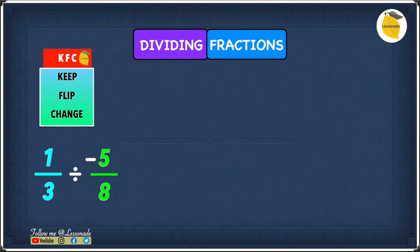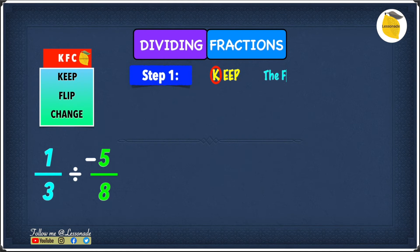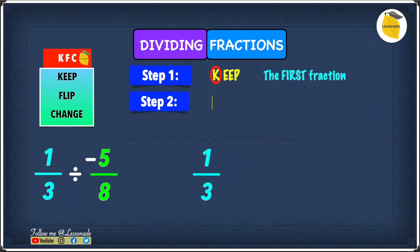Now let's see how to divide fractions using KFC for this example. The example is 1 over 3 divided by minus 5 over 8. Step one is K — keep the first fraction, so we leave 1 over 3 as it is. Step two is F — flip the second fraction.